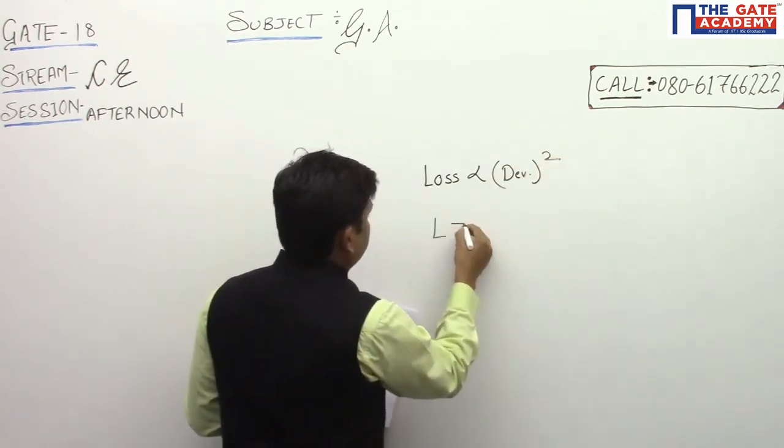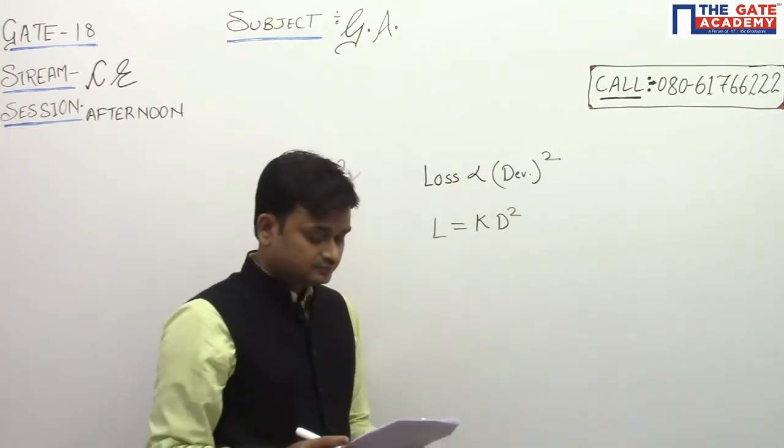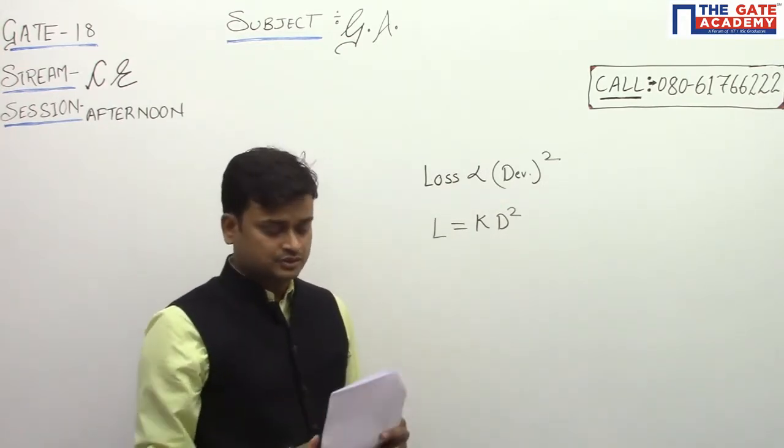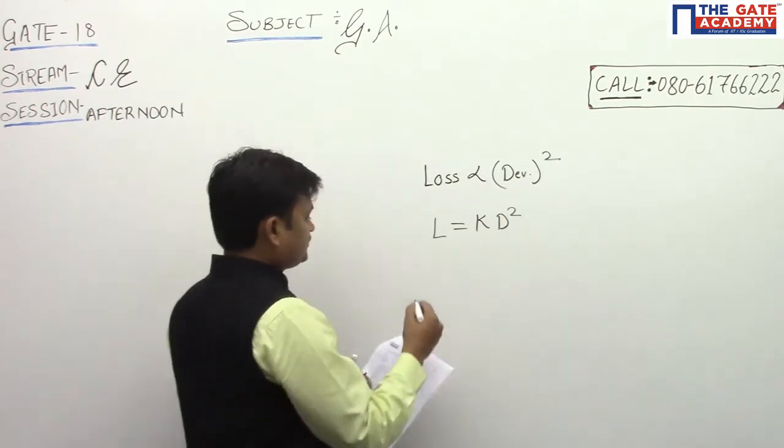So I can say L is equal to K D square. Now it is a proportion question, so now you understand how to solve, how to approach.